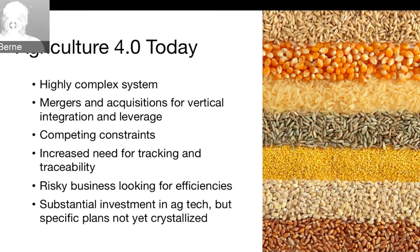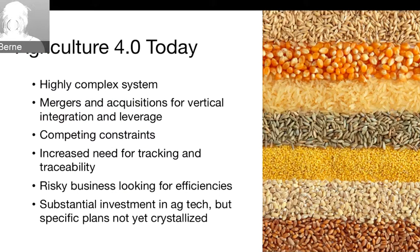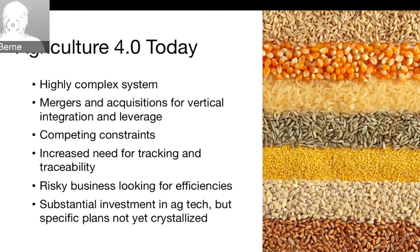Solving that end-to-end use case for the farmer takes a lot of people and a lot of investment, and no one company can tackle the whole thing at the same time. Companies are making substantial investments in data and ag technology, but no one has a specific game plan yet. If someone tells you they've figured it all out, I'd have some questions for them. But they're doing it because there's an increased need for tracking and traceability — farming is risky and they're looking for efficiencies.